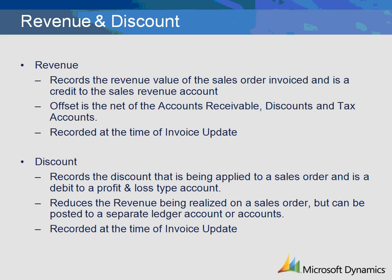The revenue transaction is the setup related to the recording of actual sales revenue excluding taxes for the item or items being sold. The ledger account for revenue is the sales revenue account or accounts used by your company. The offset to this account is the net of accounts receivable, discount, and tax accounts that have been set up in the Microsoft Dynamics AX system. This transaction is recorded at the time of invoice update. The discount transaction is the setup related to the recording of discounts that are provided to a customer at the time of invoicing. The ledger account for discount is a profit and loss type account that is typically debited. This transaction is recorded at the time of invoice update in Microsoft Dynamics AX.